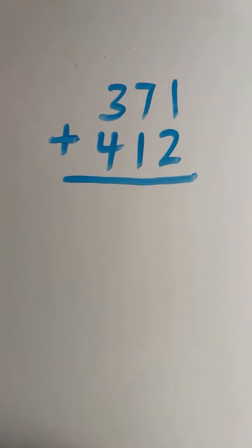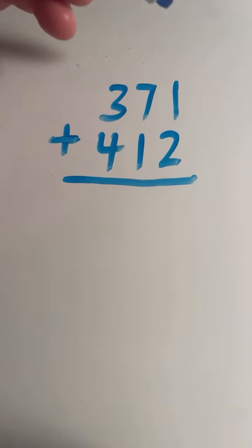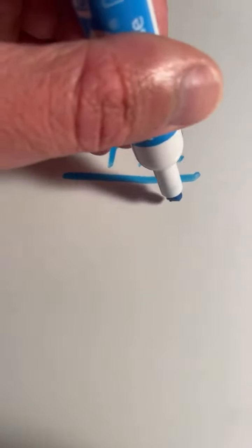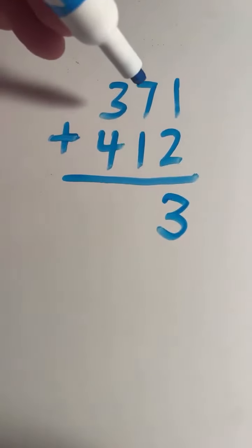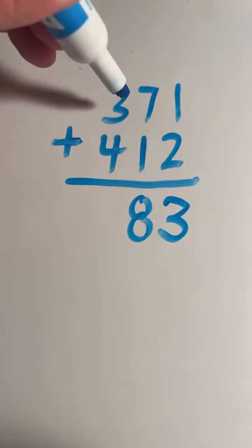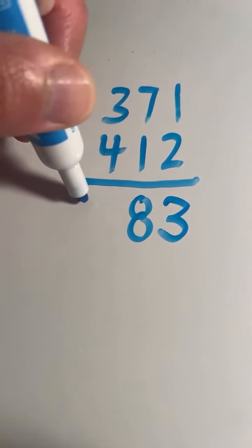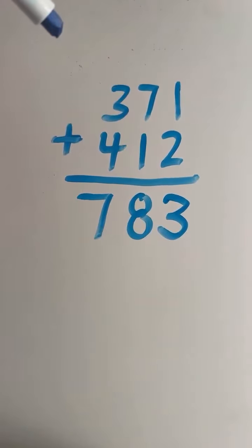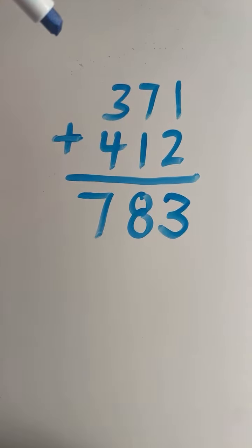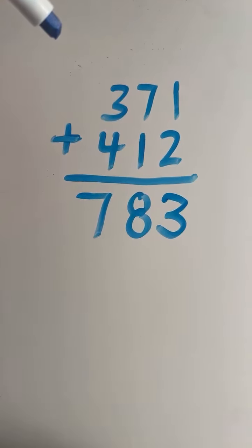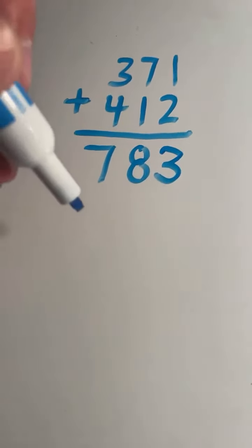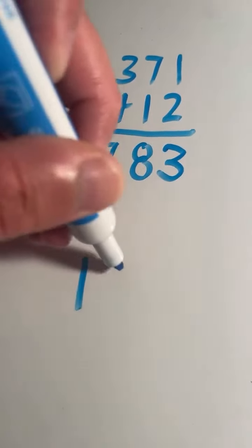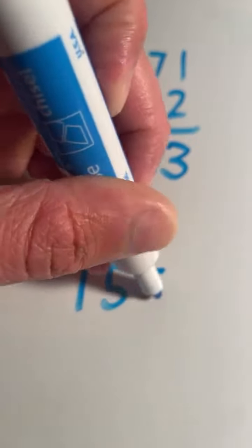So we have 371 plus 412. We always start with the digits all the way to the right, we always start in the ones place. One plus two equals three, seven plus one equals eight, three plus four equals seven. And we have our final answer: 371 plus 412 equals 783.